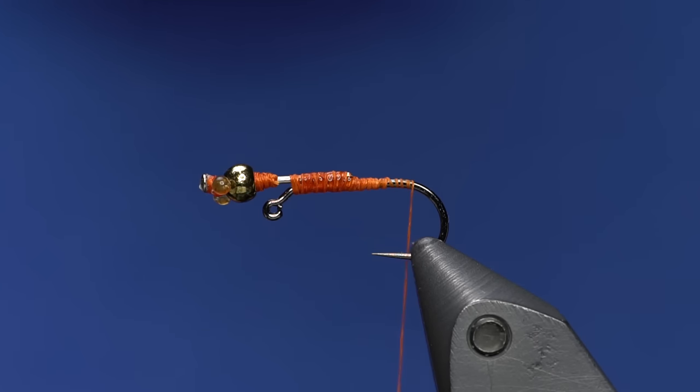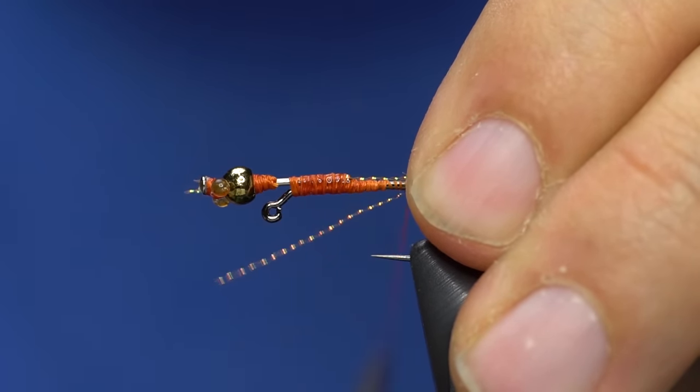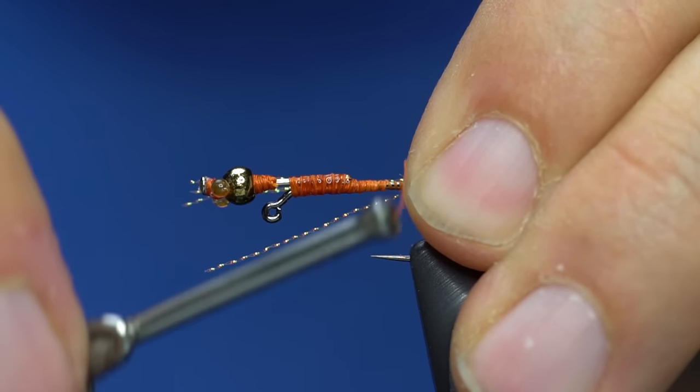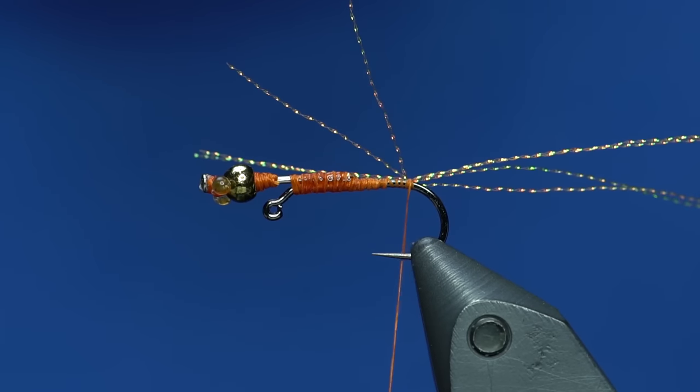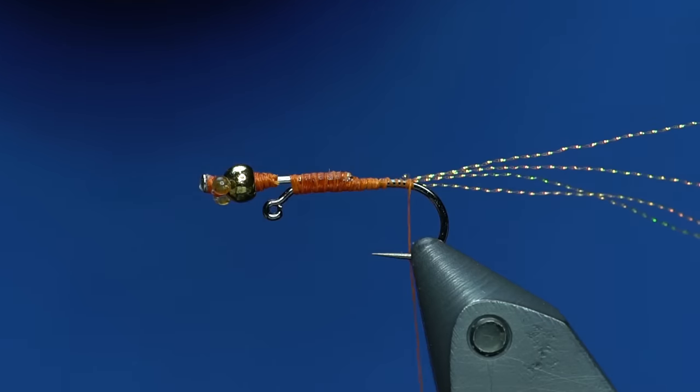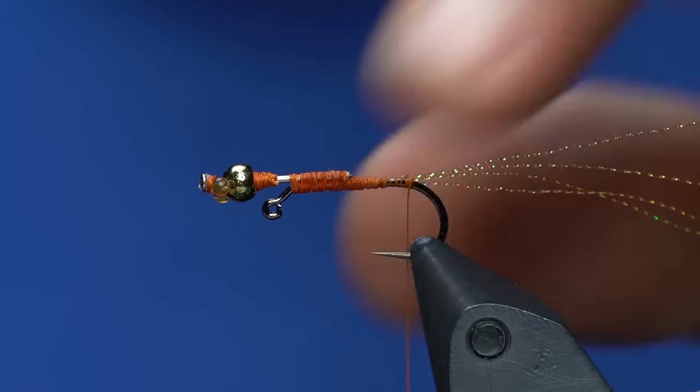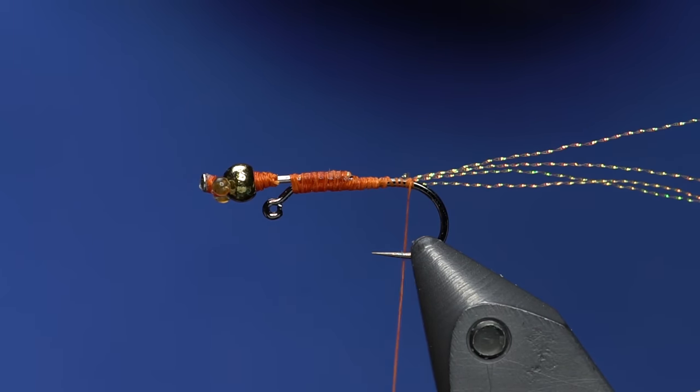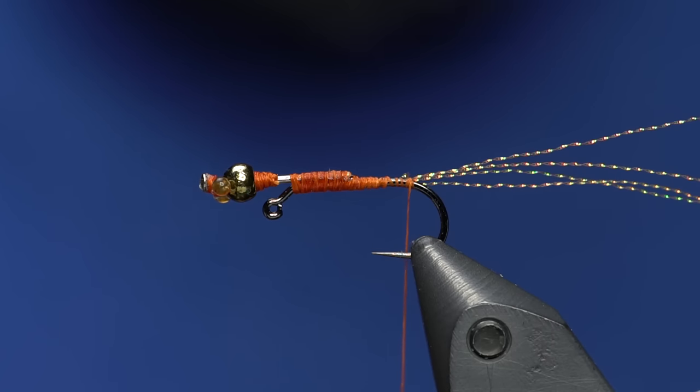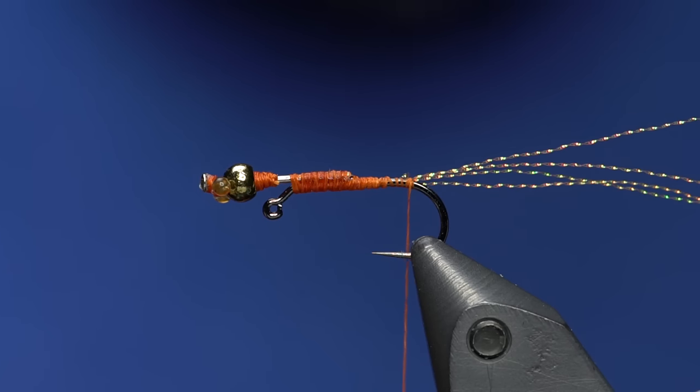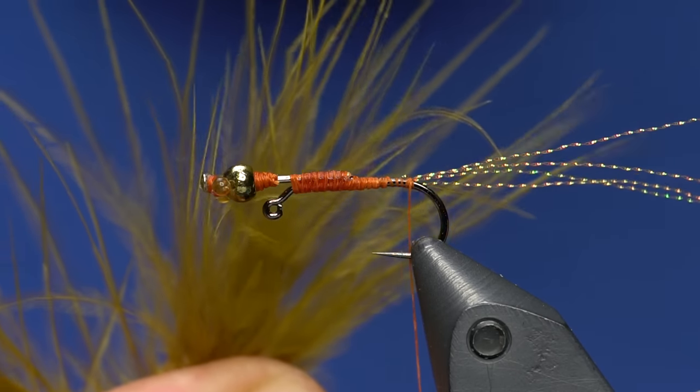First things first, we're going to tie in the tailing materials. First I'm going to use some midge flash. You could also use crystal flash. I kind of like the midge stuff because it's more limp and smaller. I'm just going to line this up right at the bend of the hook there.